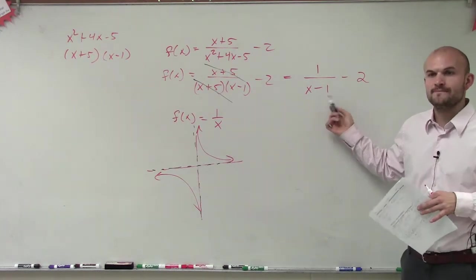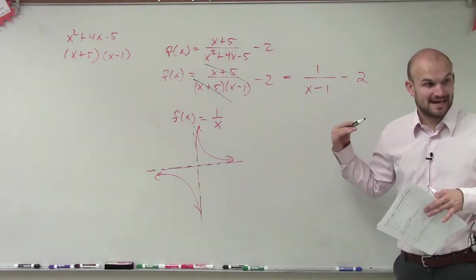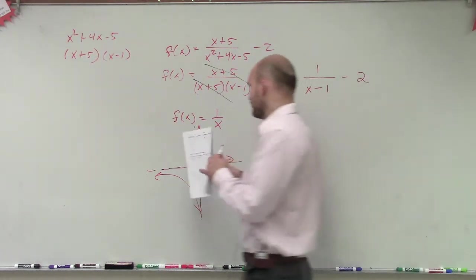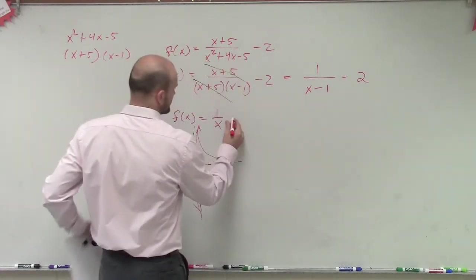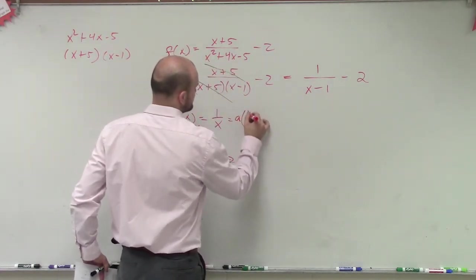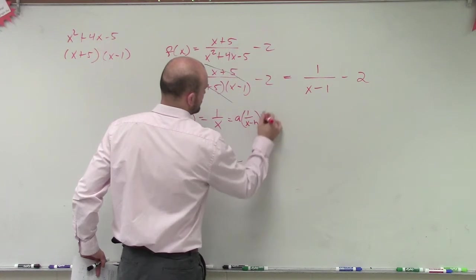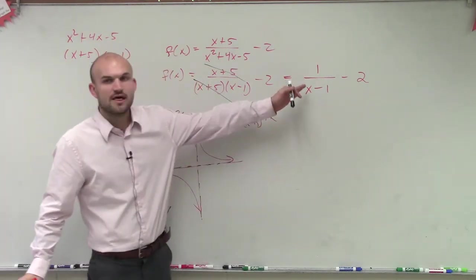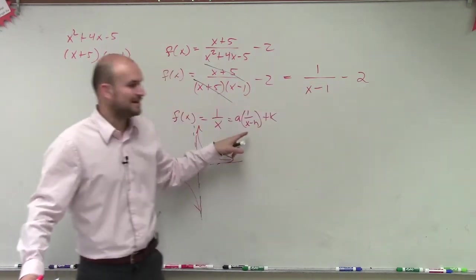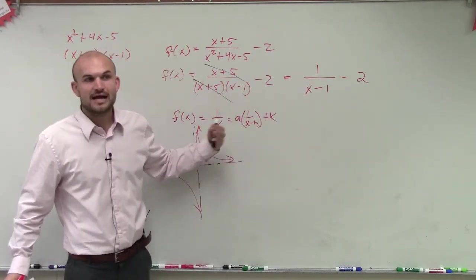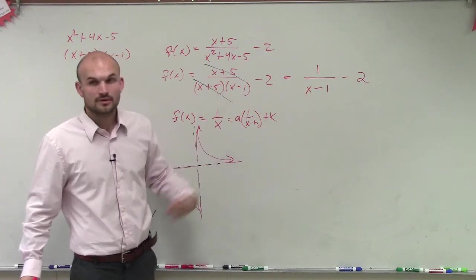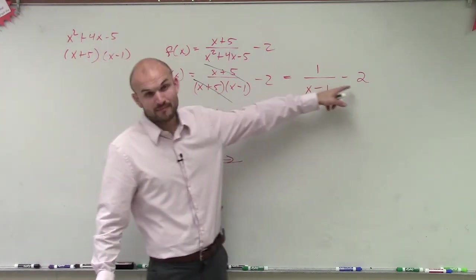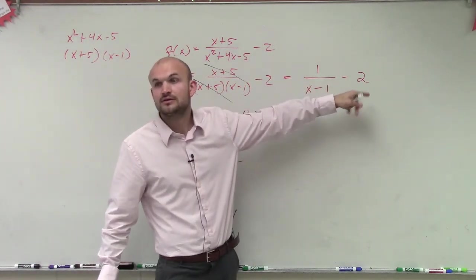So what we notice is we have this minus 1. That is your x minus h. Remember, we write this formula. And our standard position looked like this. So this is a times 1 over x minus h plus k. So we need to say, alright, what are my transformations then for this function? Well, I have minus 1, which means your h is now going to shift to the right one. And then minus 2 tells you you're going to shift down 2.